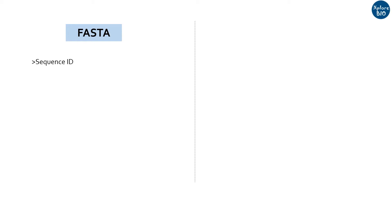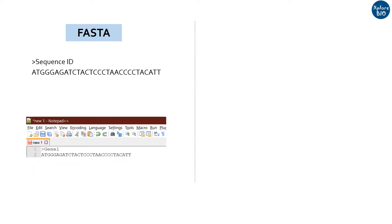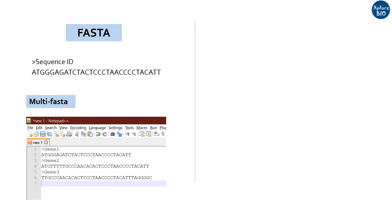The FASTA format has two components. First is the sequence ID, which always begins with a greater-than symbol. The ID can be a gene ID, protein ID, or any other custom ID you want to assign. The next line or lines will be the sequence of that ID. You can make your own FASTA formatted sequence file by opening a notepad or notepad++, adding a greater-than symbol followed by a suitable ID, and in the next line adding your sequence. In the same way you can add multiple sequences to get a multi-FASTA file, saved with a .fa or .fasta extension.